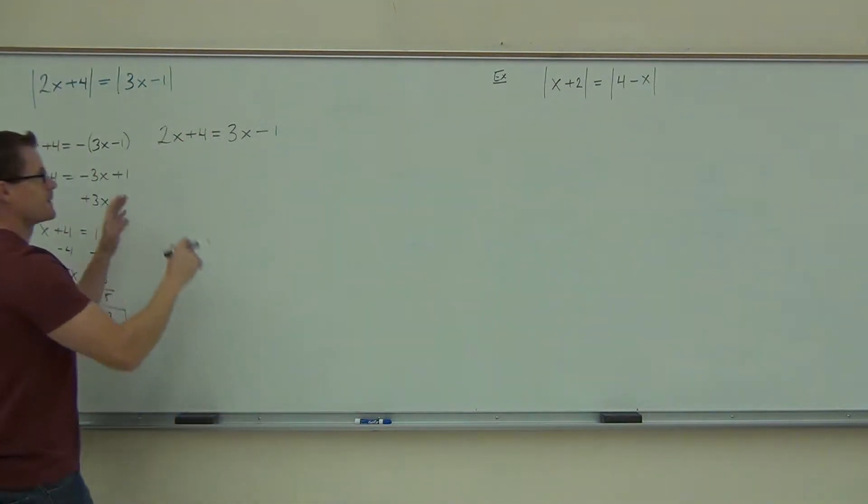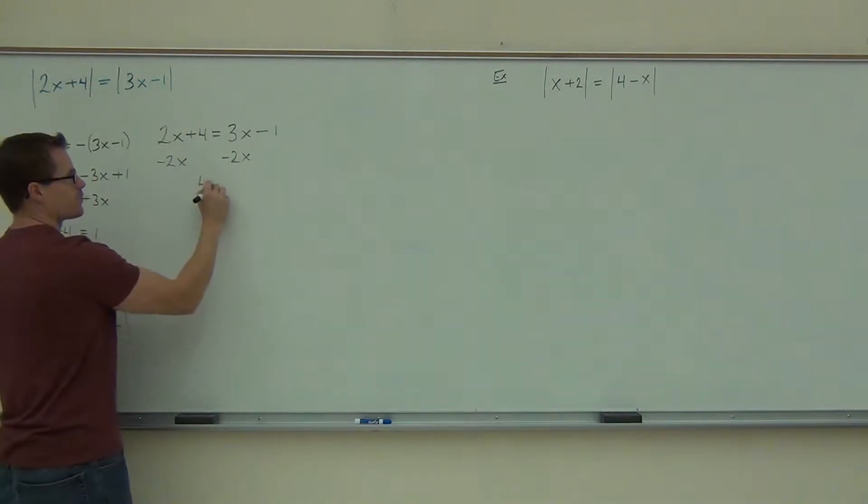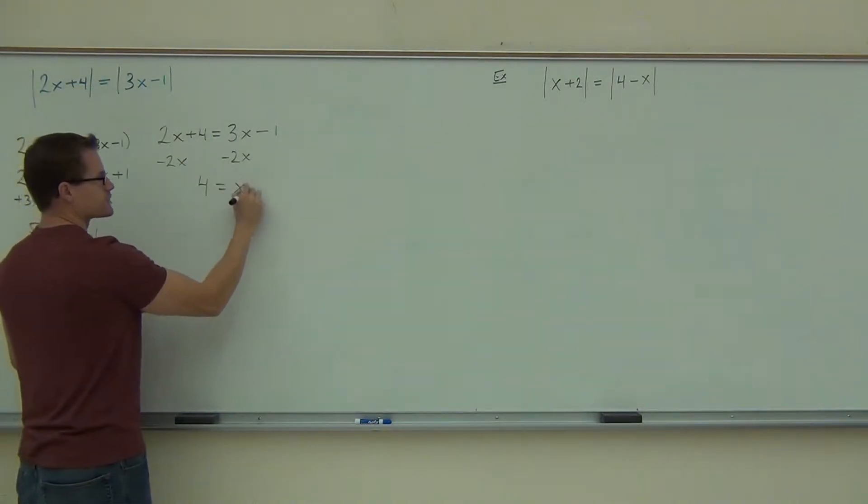The other one, basically the same idea, we're just solving our equation here. We get four, get rid of the smaller variable, equals x minus one, we add one to both sides, we get five equals x.